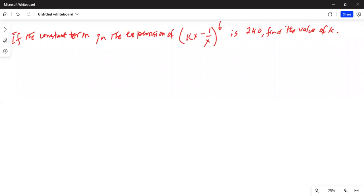Good day everybody. Today we are going to talk about a problem in which we will find the constant k using the binomial expansion. So I will share my screen with you. If the constant term in the expansion of (kx - 1/x)^6 is 240, find the value of k.